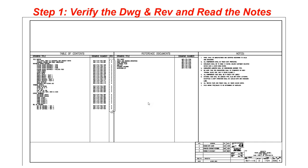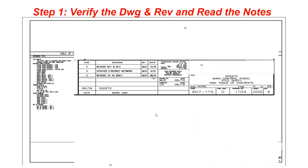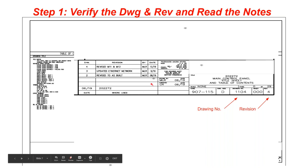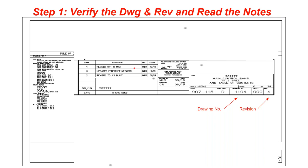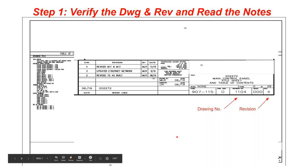The first thing to do when looking at a drawing set is check the title block — make sure you have the correct drawing number and, just as importantly, the correct revision. You can see there were revisions made as-built, such as adding an Ethernet network and later revisions, all dated. The purpose of the title block is to make sure you have the correct drawing set and revision.